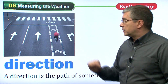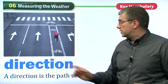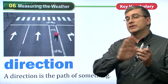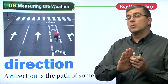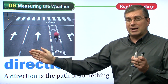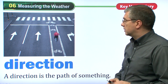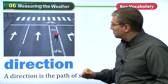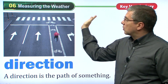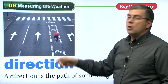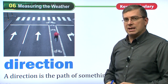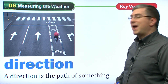Direction is the path of something. If the wind is coming from the west and going to the east, it's blowing in an easterly direction. What is the direction of the wind? What direction is something moving in? For example, is that man going to go right, is he going to go left — in what direction is something moving? Direction is the path of something.